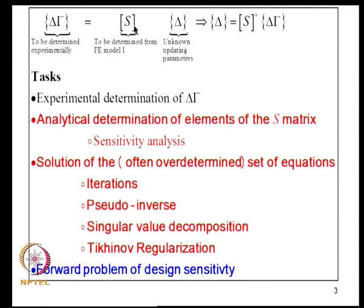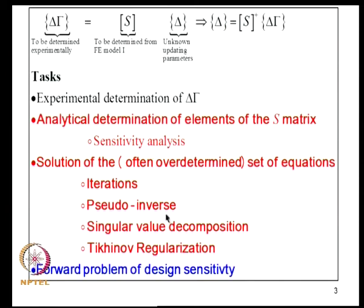The S matrix is the sensitivity matrix, which has to be determined from the postulated finite element model. Delta is the vector of unknown updating parameters. This typically constitutes a set of over-determined equations. This is a formulation based on the first-order sensitivity method, and we obtain delta typically by using the pseudo inverse of S into delta gamma. We can refine this procedure using Tikhonov regularization strategies. The tasks are: experimental determination of delta gamma, analytical determination of the S matrix elements via sensitivity analysis, and then solution of the over-determined equations by iteration, pseudo inverse, singular value decomposition, or Tikhonov regularization.